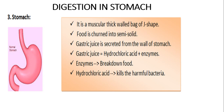Now, B for buccal cavity, O for esophagus, and S for stomach. What is the stomach? It is a muscular, thick-walled bag, J-shaped, where food is churned into semi-solid form. There is gastric juice which is secreted from the wall of the stomach, and this includes hydrochloric acid and a few enzymes.